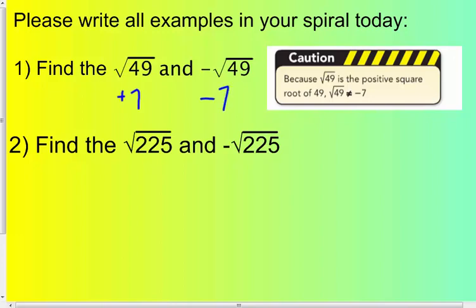Find the square root of 225. The square root of 225 is 15. And the inverse of the square root of 225 is negative 15.